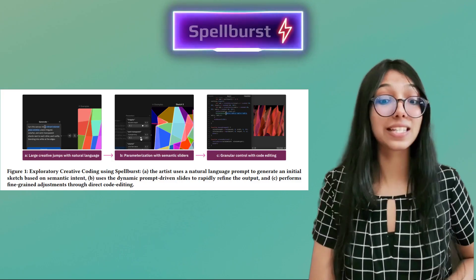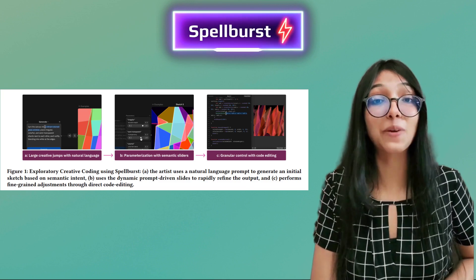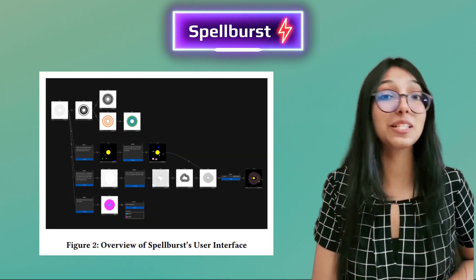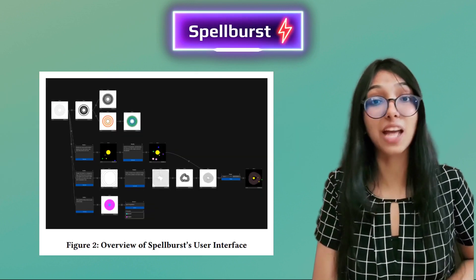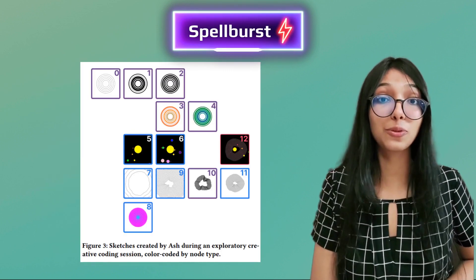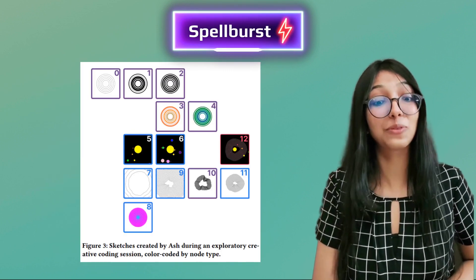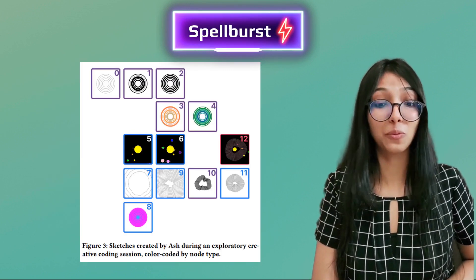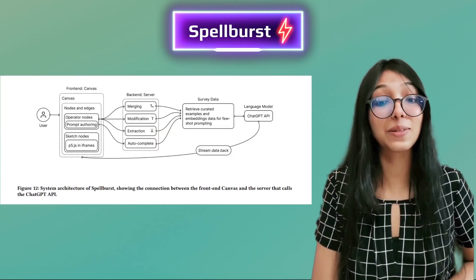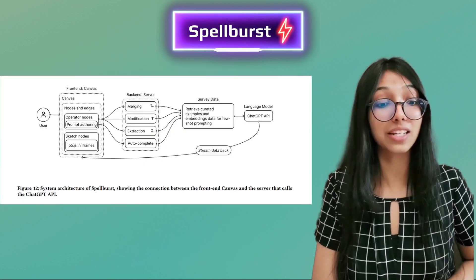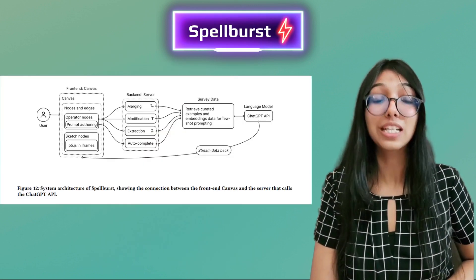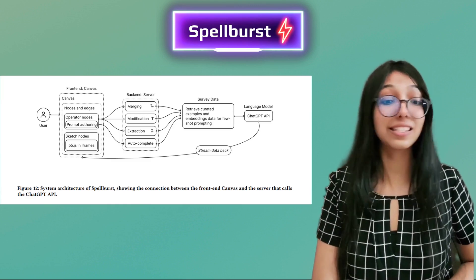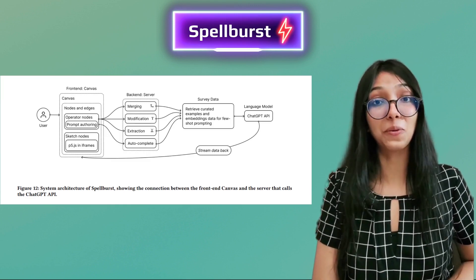But now there's a game changer in town, and it's called Spellburst. Developed by brilliant minds at Stanford University, this tool is said to revolutionize the way generative artists work. It harnesses the power of the cutting-edge GPT-4 language model to simplify the process of turning artistic ideas into code.